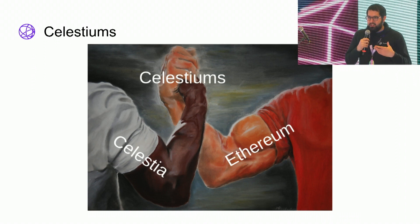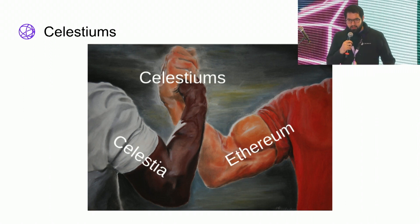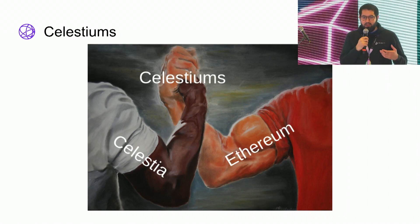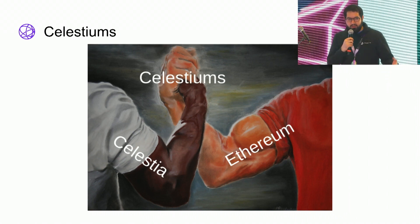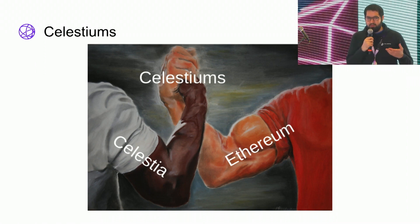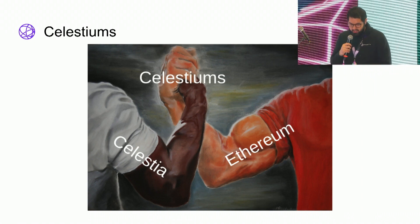A Celestium is essentially taking the best of both worlds from Celestia and Ethereum and using them together synergistically. Celestia can provide highly scalable data availability throughput and Ethereum can serve as a settlement layer and a liquidity layer, because as we all know Ethereum currently has the strongest liquidity moat — it has the most liquidity of any other blockchain, especially programmable money or smart contract blockchains. This allows applications on Ethereum to leverage what Celestia has to offer.